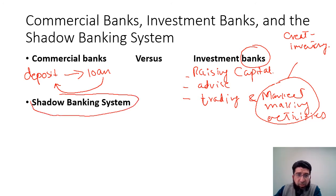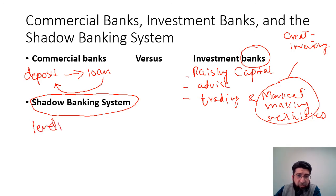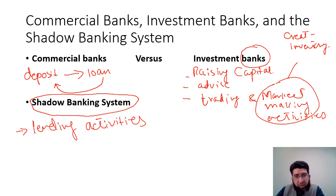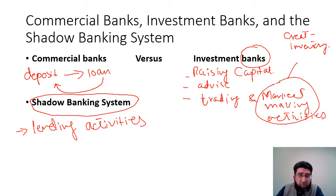There is also a large part of what financial institutions do in the informal sector, called the shadow banking system. The shadow banking system does not take deposits but does engage in lending activities. In Pakistan, for example, there is a large shadow banking system in the informal sector because a large portion of the population does not have access to commercial or investment banks. In developing countries, the shadow banking system helps bridge that gap, however at very high and exorbitant interest rates.